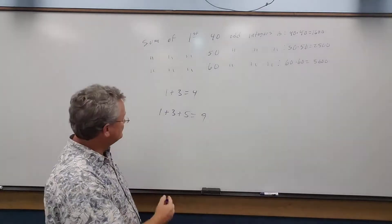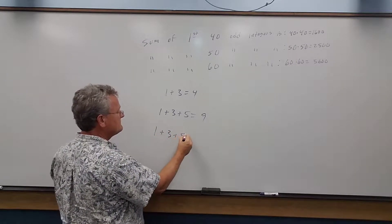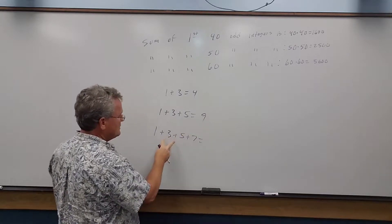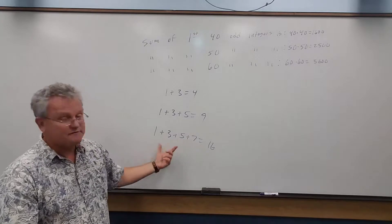What about the sum of the first 4 odd integers? Well, 9 plus 7 is 16, which is 4 squared.